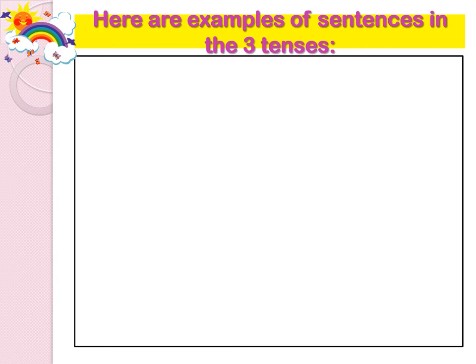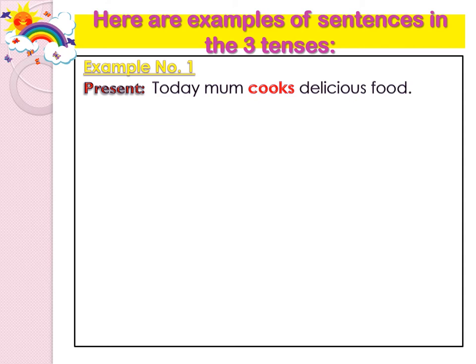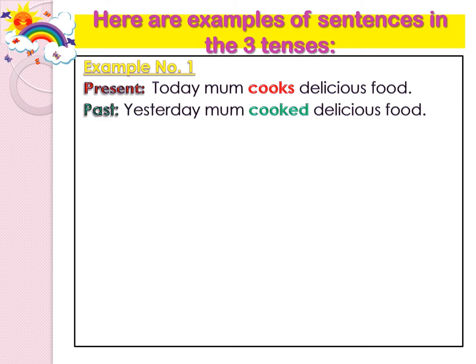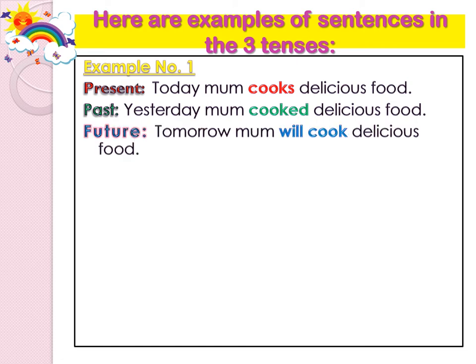Here are examples of sentences in the three tenses. Example number one. Present tense: Today mum cooks delicious food. Past tense: Yesterday mum cooked delicious food. Future tense: Tomorrow mum will cook delicious food.